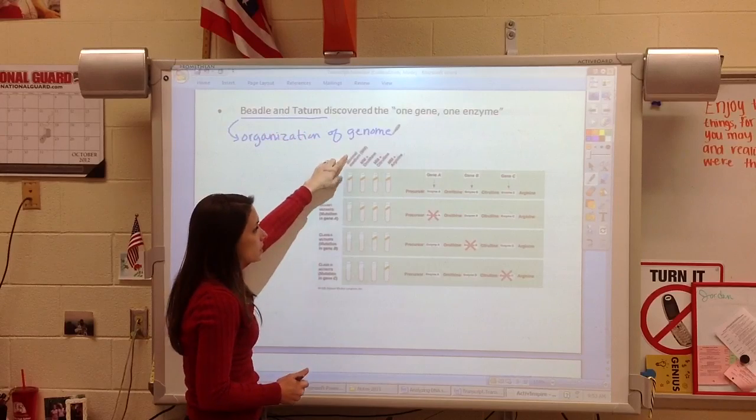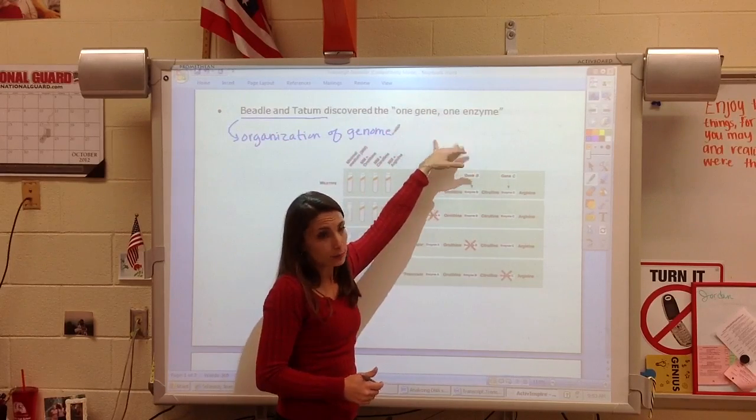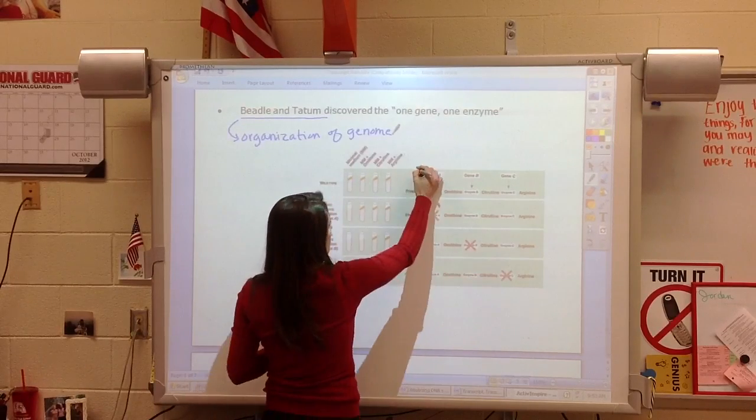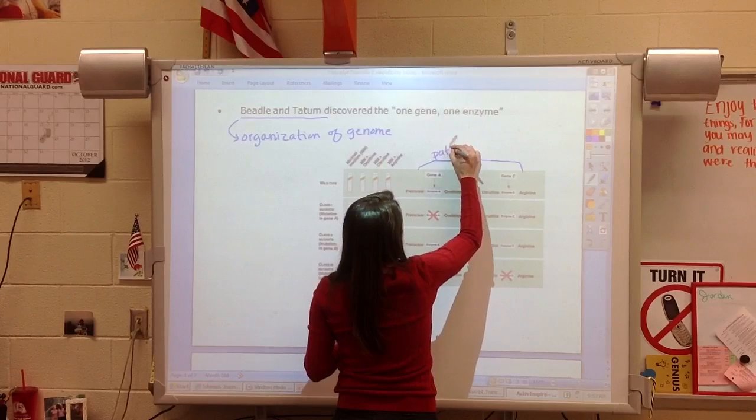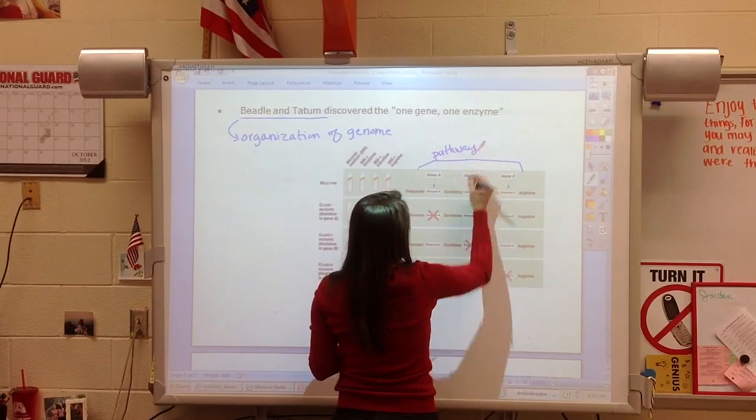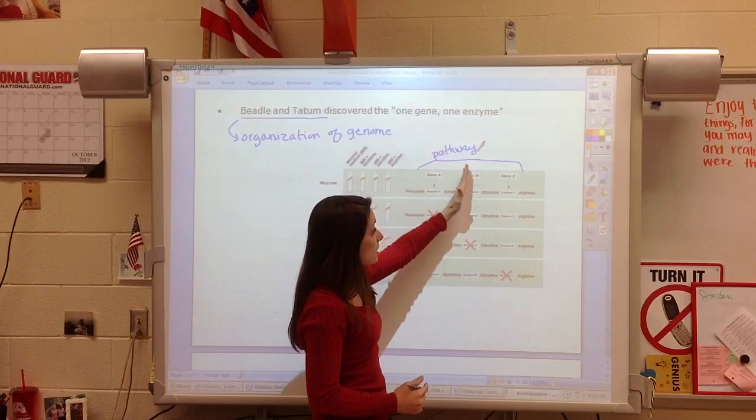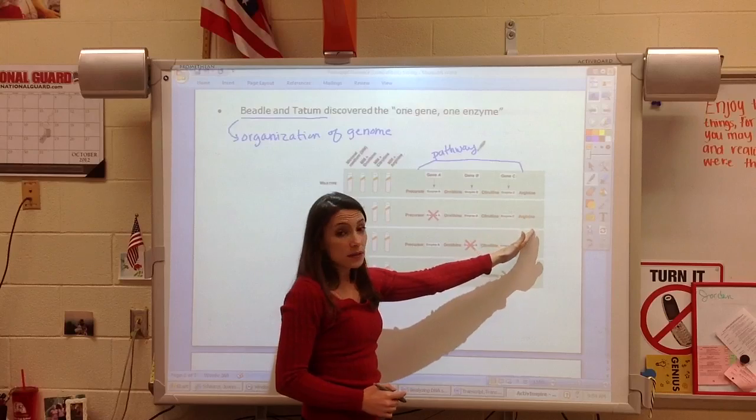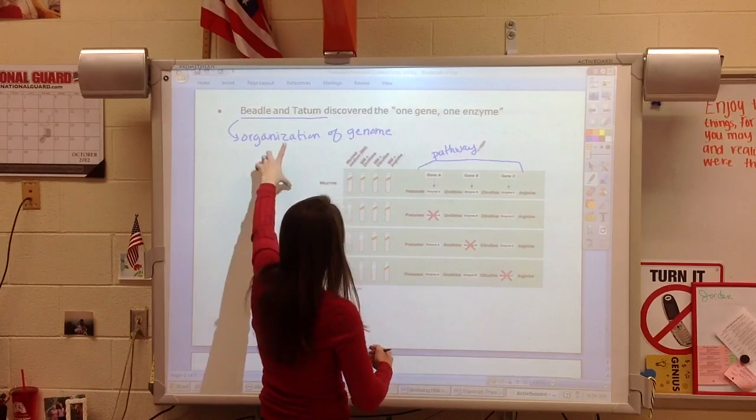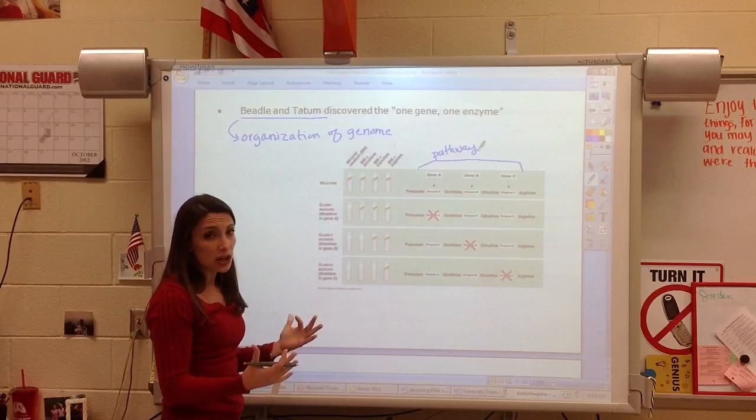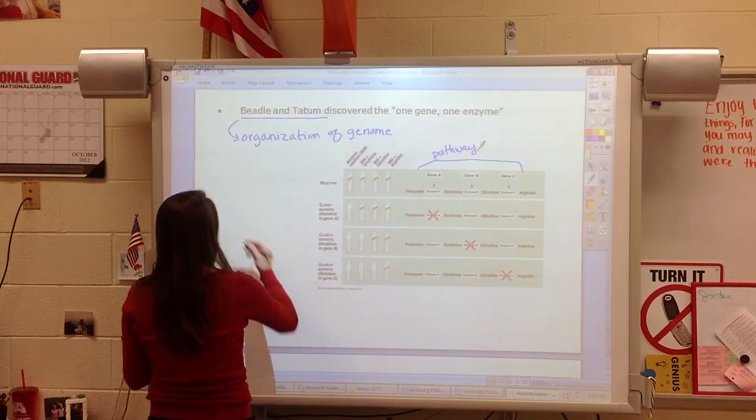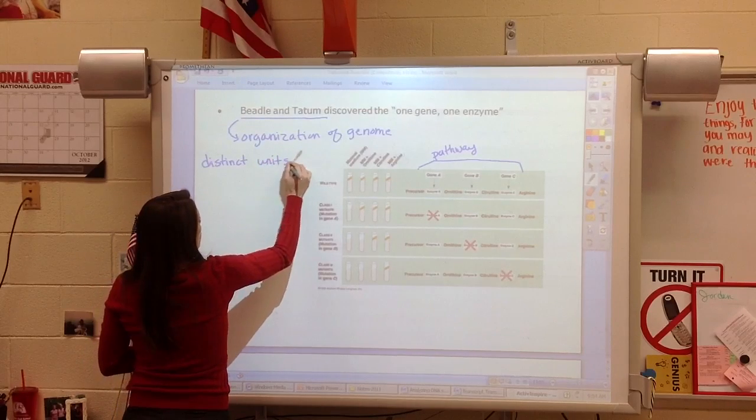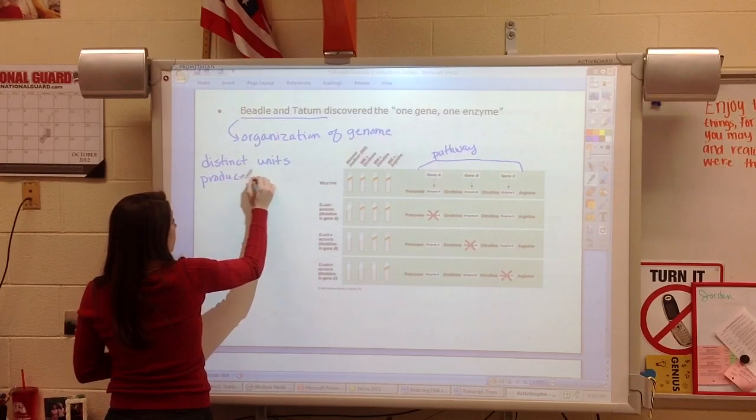So their hypothesis was one gene, one enzyme. They were looking at pathways that produce a product. And what they realized is that there were different enzymes needed for different pathways. And that if one enzyme didn't work, a lot of times the whole pathway was stopped. So we do just want to realize where did the concept of a gene and these distinct units came from. And so the concept that distinct units produce a specific protein.